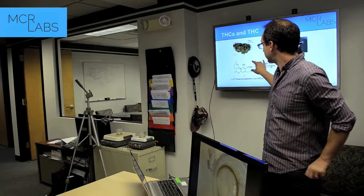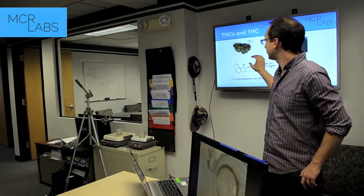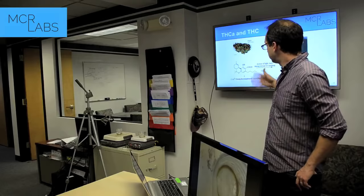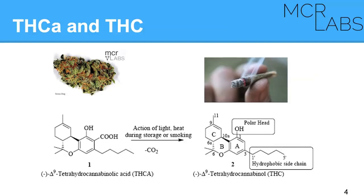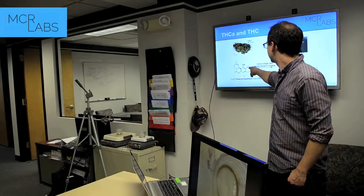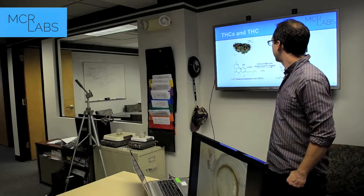That molecule — those sticks and structures — represents the way the atoms are connected, and that's what interacts with molecules in your body and brain to get you high. Except THCA is a little bit different from THC. The difference is that COOH group — it's called a functional group. There are extra atoms: three atoms present in THCA that are not present in THC.